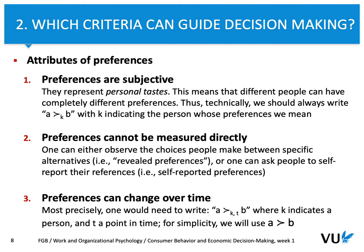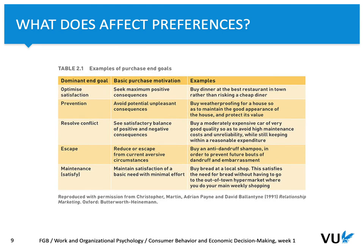When we consider decision-making in a consumer context, we also need to take into account specific motives that drive people's behavior. Purchase motivation can be a result of specific types of motivations or drives. Consumers can make their decisions and apply specific preferences depending on their dominant end goal. In the textbook you can find a table that describes five different dominant end goals. One end goal can be to optimize satisfaction.